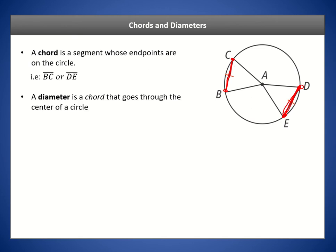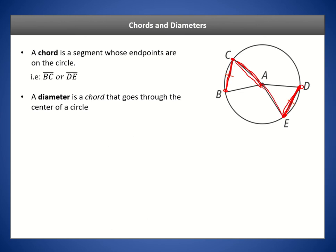A diameter is a chord that goes through the center of a circle. The diameter is essentially double the radius — two radii stacked together. It must be one single line segment whose endpoints are on the circle and which crosses the center. Note that CA and AE together are not a diameter because they are composed of two line segments that are not collinear.